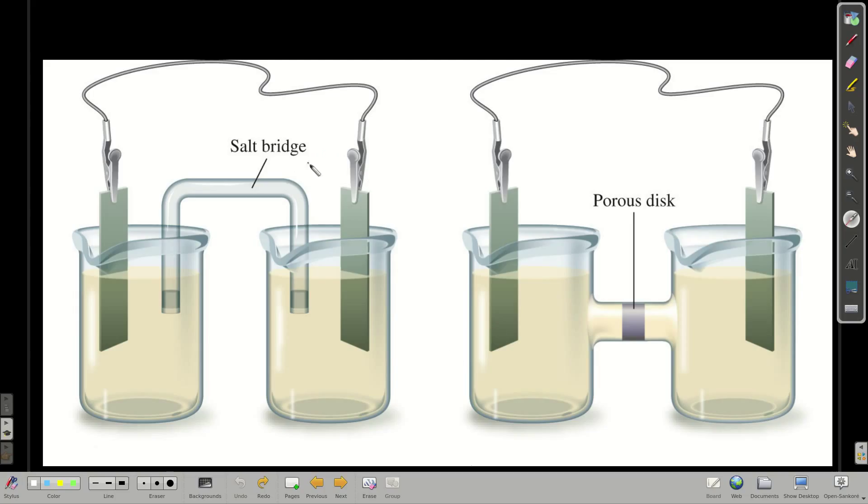We can use what's called either a salt bridge or a porous disk. In a salt bridge, there might be something called agar that plugs in here. What it is, it's kind of like jelly. But what it does is it allows ions to flow from one half cell. We call these half cells, by the way, from one half cell to the other.